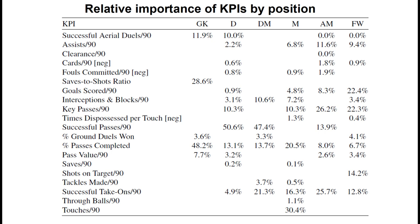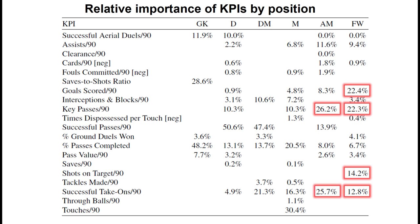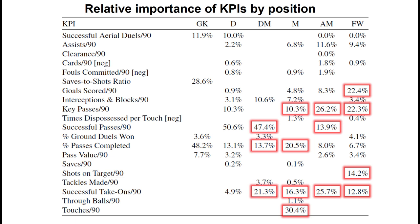What I get out of this is that, to a large extent, the factors explaining a player's plus-minus rating are relevant for the role that player has in the team. For a forward, the most important factors are goals scored, key passes, shots on target, and successful take-ons. For an attacking midfielder, the most important are key passes and successful take-ons, followed by successful passes. For midfielders, the most important are touches and passes completed, followed by take-ons and key passes. For defensive midfielders, successful passes are most important, followed by take-ons, passes completed, and interceptions and blocks. Defenders rely on successful passes, then passes completed, key passes, and successful aerial duels. For goalkeepers, saves-to-shots ratio is important, but mostly passes completed.